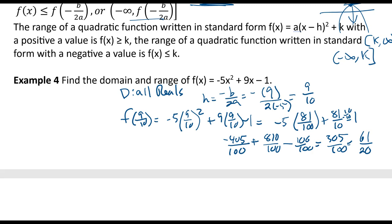So since this is negative, it opens down. Vertex is the high point. So the range would be negative infinity up to 61/20. And that should be it. Oh, sorry, it should be a squared off bracket. Okay.